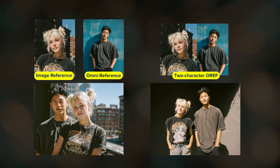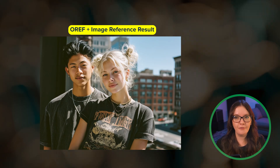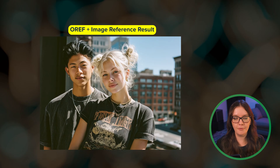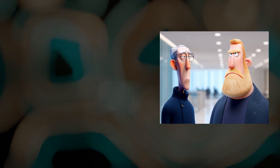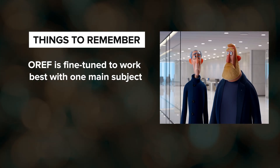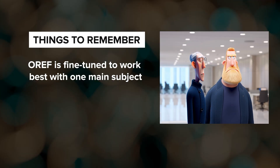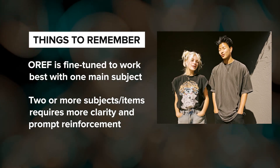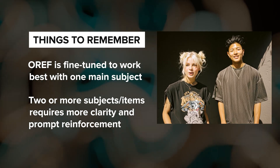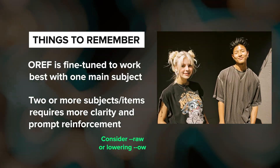Just for comparison, if we circle back to the first method and use a collage image of these two, the character likeness in the results is a little better but not too far off from using an oref with an image reference. Her shirt definitely matches the reference way better with the two-character collage approach. But if the two-character collage method doesn't work well for you and the images you're working with aren't suitable for making a composite, maybe consider trying the oref plus image reference approach as your next best option. Remember that the current Omni reference feature is fine-tuned to work really well with replicating one main subject — once you start asking it to replicate more than one, you may need to work harder in the prompt text or with parameter adjustments such as changing the Omni weight or adding raw mode.